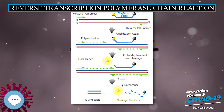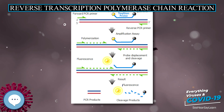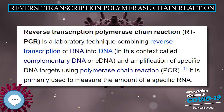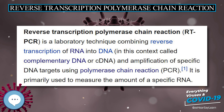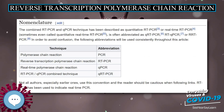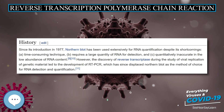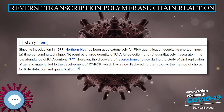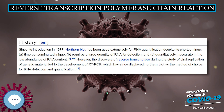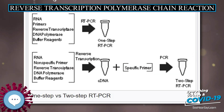Nomenclature: The combined RT-PCR and qPCR technique has been described as quantitative RT-PCR or real-time RT-PCR, sometimes even called quantitative real-time RT-PCR, often abbreviated as qRT-PCR, RT-qPCR, or RRT-PCR. In order to avoid confusion, the following abbreviations will be used consistently throughout this article.